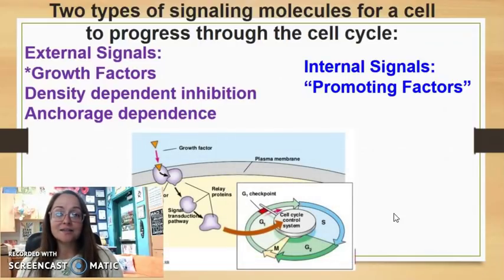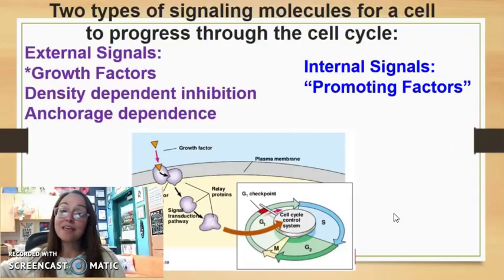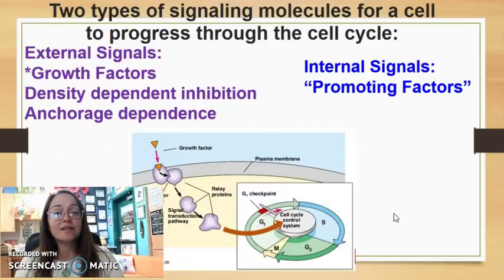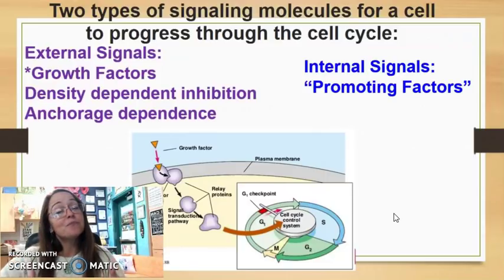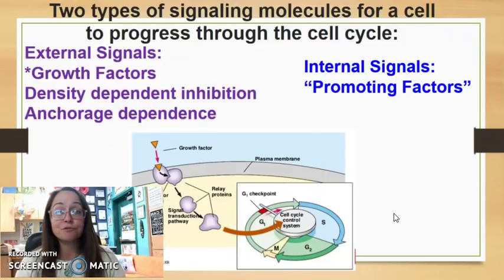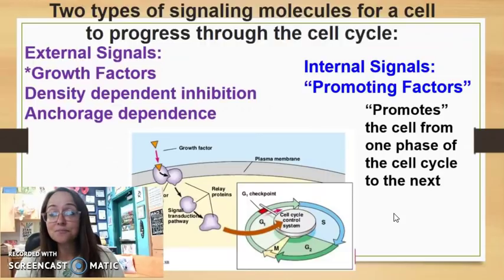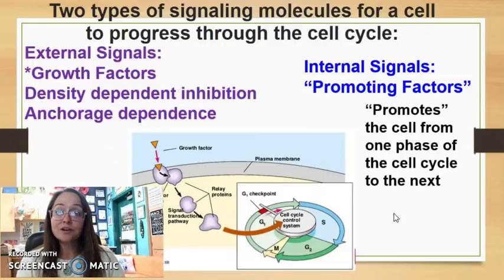When we look at our options with the cell cycle, you have the external signal, the growth factor, as well as the internal molecules to help it move from G1 to S, or S to G2, G2 to M phase, and move through the cell cycle. Internal messages are going to help the cell promote through.